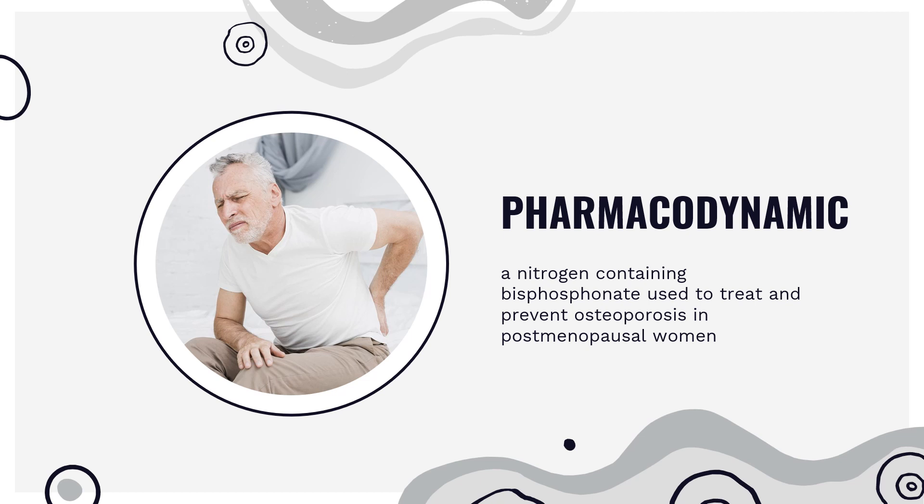Pharmacodynamics: Ibandronate is a nitrogen-containing bisphosphonate used to treat and prevent osteoporosis in postmenopausal women. The therapeutic index is wide as overdoses are not especially toxic, and the duration of action is long — the half-life can be up to 157 hours. Patients should be counseled regarding the risk of upper GI adverse reactions, hypocalcemia, musculoskeletal pain, osteonecrosis of the jaw, atypical fractures of the femur, and severe renal impairment.